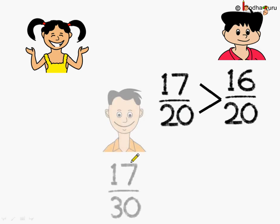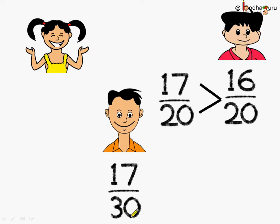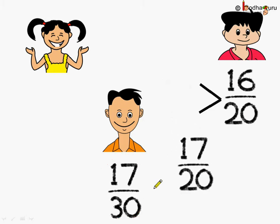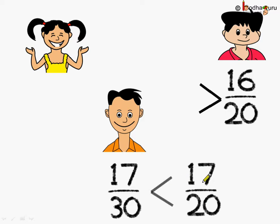Now this is Aman. Aman scored 17 out of 30 marks. So 17 by 20 is much greater than 17 by 30, because Khushi scored 17 out of 20 marks and Aman scored 17 out of 30 marks. So 17 by 30 is less than 17 by 20. Understood?